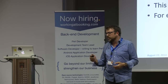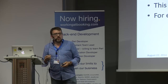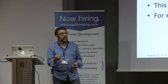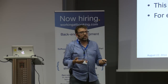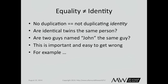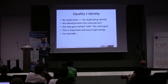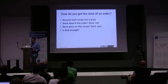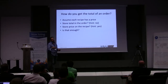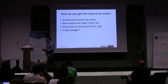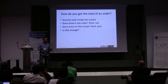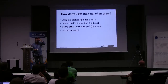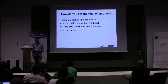Now that you've covered the structure, we're going a little deeper. This is the one that causes all sorts of subtle bugs: just because two things look the same does not mean they are the same thing. If I meet another guy named Curtis, he's not me. We're selling recipes online — how do you get the price of a recipe? Do we store the total on the order? No. Do we store it on the recipe? Yes — but that's actually not enough, and we'll see why.